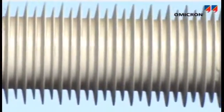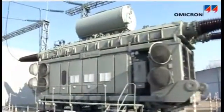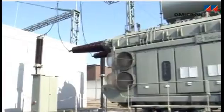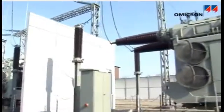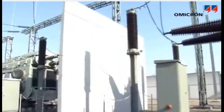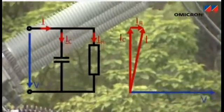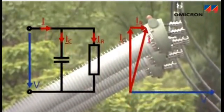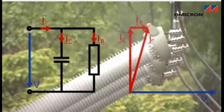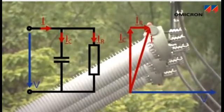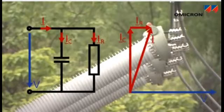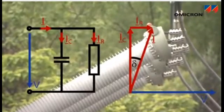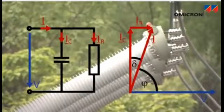The condition of the bushings and the overall insulation of power transformers can be investigated by measuring the capacitance and dissipation factor, also known as the tangent delta or power factor. Aging and decomposition of the insulation, or the ingress of water, increases the losses, and thus more energy is turned into heat in the insulation. The level of this dissipation is expressed by the dissipation factor or power factor.